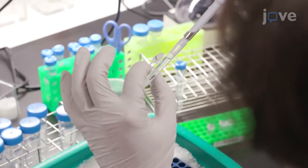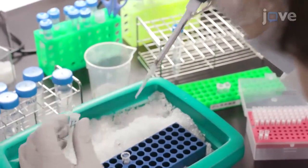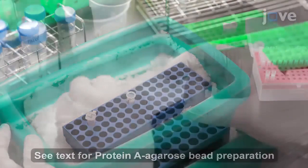Collect the supernatant and transfer 1 milliliter each of the supernatant into 1.5 milliliter microcentrifuge tubes. Pre-clear the lysate by adding 40 microliters of pre-washed protein A agarose beads per 1 milliliter of the lysate.